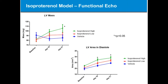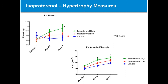When we look at measures of hypertrophy, the heart is working harder, and so we would expect that some hypertrophy would occur during this study, and in fact we can see that very clearly. We see a big increase in LV mass, and we do see that dose-dependent effect. Similarly, if we look at the left ventricle area in diastole, we see a significant effect at day 12 and day 21 in the high dose of isoproterenol.